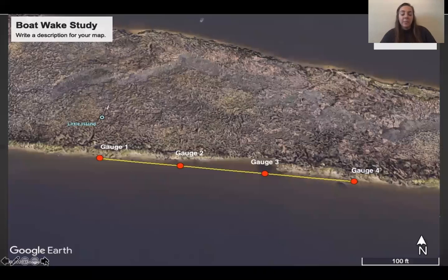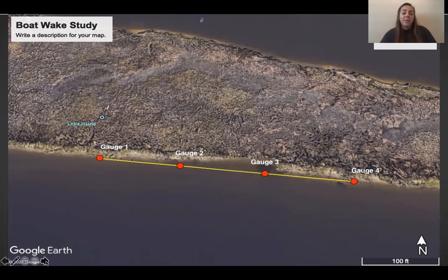As you can see, our design was pretty simple here. We have four DIY wave gauges set at about a one meter depth and about 40 meters from each other.